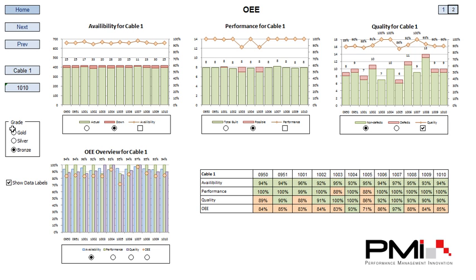Again we've got the gold, silver and bronze levels here, which actually affect the RAG status on this chart. So on a bronze level, anything above 90% is a green. However, on a silver level, 90% isn't good enough anymore — we need 97% to be green. And on a gold level, you need 99 and above. So you can see very quickly at what sort of level you're actually working at simply by clicking on the relevant option buttons.